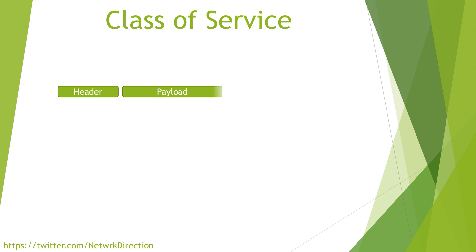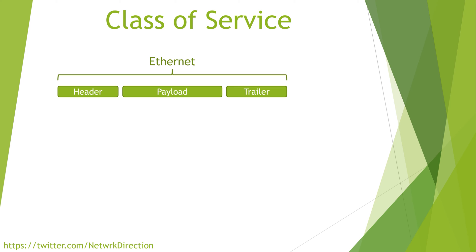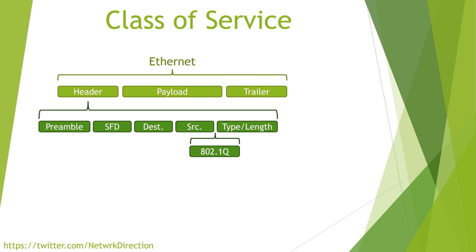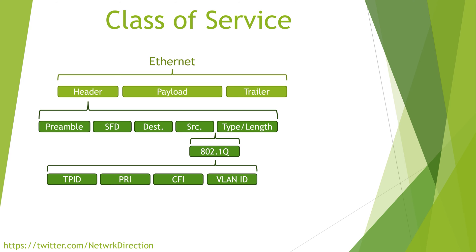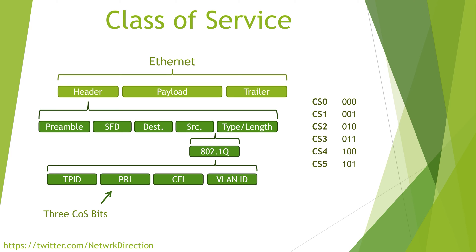Ethernet frames consist of a header, payload, and data. In the header, we might have an 802.1Q field, which is present if tagging is used — that is, if we're passing tagged frames across a trunk link. Inside this field are a few subfields, one of which is called the PRI field. This contains three class of service bits. Three bits means we have eight different combinations, known as class selectors CS0 through to CS7. The higher the class selector, the higher the priority of the traffic. We would use class of service markings if we're dealing with layer two only traffic or if we have switches that aren't able to inspect the IP headers. Usually we would prefer to use the layer three markings if we can.